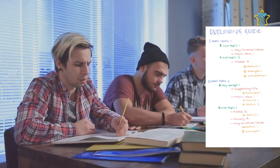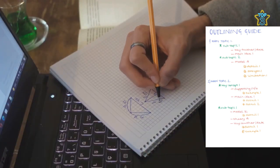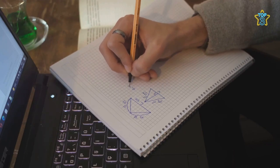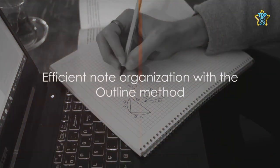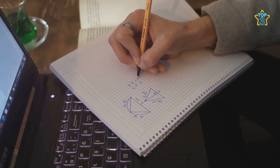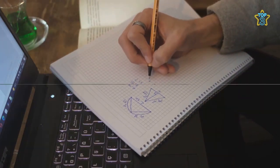Now, the outline method is a treat for linear learners. It provides a logical sequence, making it easier to connect the dots and see how ideas relate. And the cherry on top? With the outline method, your notes are organized from the get-go. No more hunting for that one crucial point amidst a sea of scribbles.